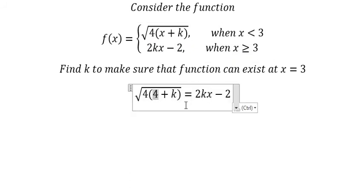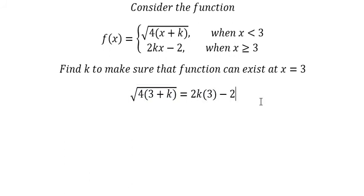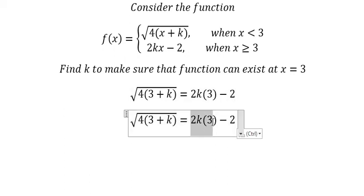We put 3 in. This one is about number 3. So you get 6k minus 2.